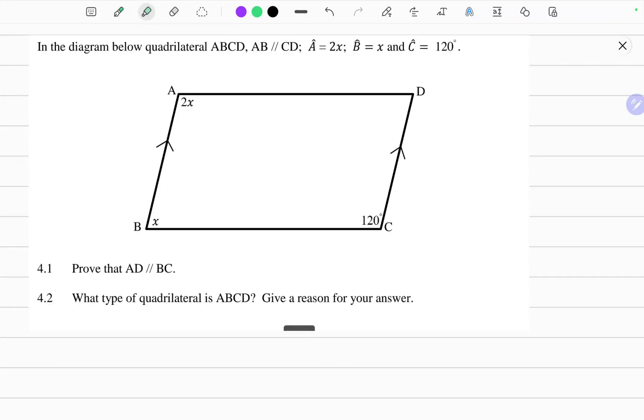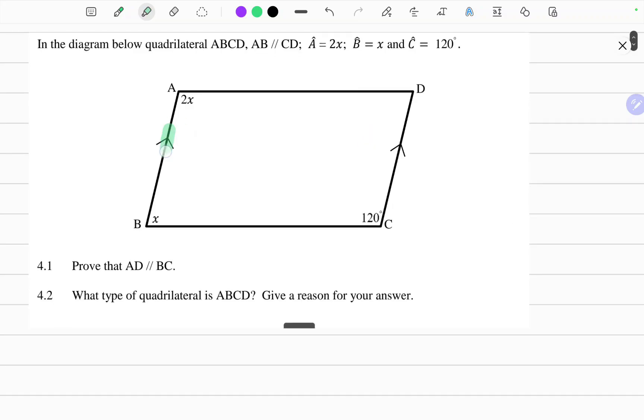So the question reads as follows. In the diagram below quadrilateral ABCD where AB is parallel to CD. So these two line segments are parallel. Angle A is equal to 2x, B is equal to x and angle C is equal to 120 degrees.